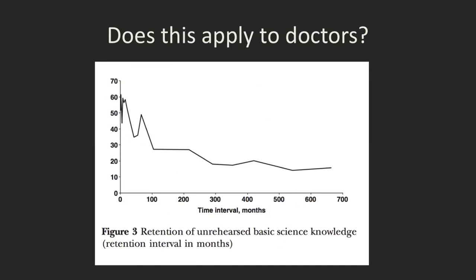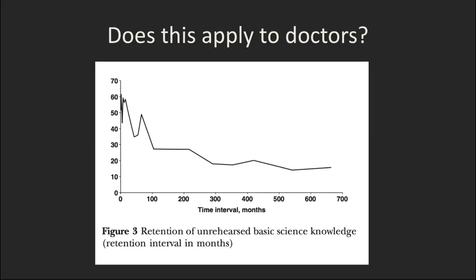Does this apply to doctors? In one experiment, roughly 80 physicians — between one and 55 years out of basic sciences — were given a basic science exam and asked whether they'd used each piece of information since first learning it. For information they said they'd never used again — like the Krebs cycle — you can see it forms an Ebbinghaus-type forgetting curve. You can see the forgetting happening across the decades.